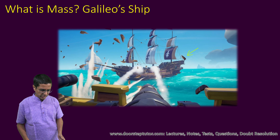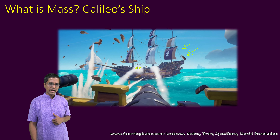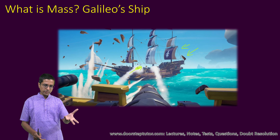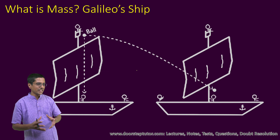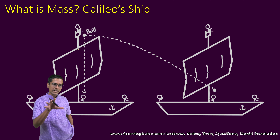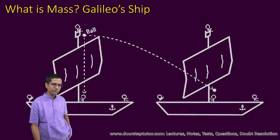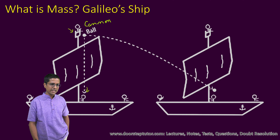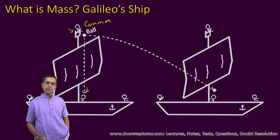In Galileo's time, they used to have ships and would use cannon balls to attack other ships. So in his days, these were the things they used to play with, and it is no wonder that he proposed an experiment using just this. He said: what happens if we take a cannon ball and drop it from the top of the mast of a ship? If the ship is stationary, the ball would fall straight down and the person standing at the bottom of the mast would be able to catch it.